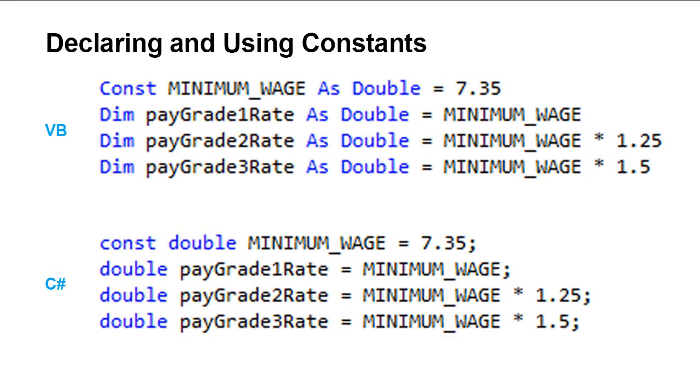We've already seen where variables are spaces in memory that contain some type of data, and that data may change over the course of a program. Constants are really like variables. They're a space in memory that contains a data type and some value, but hence the name constant versus variable, the value never changes over the course of the program.